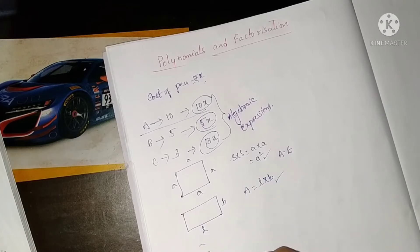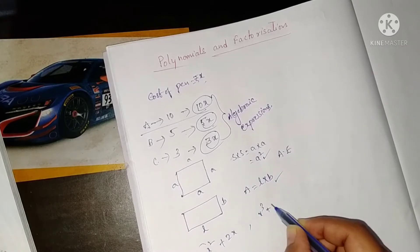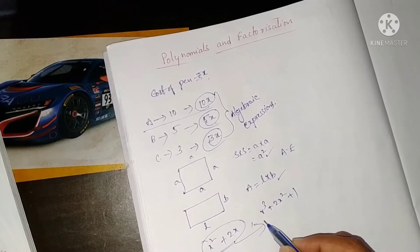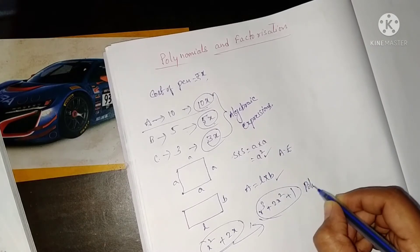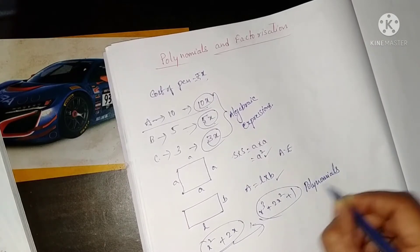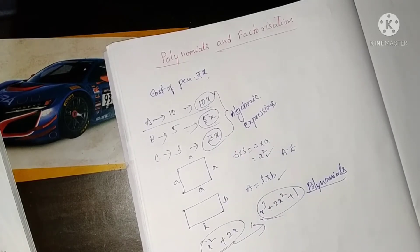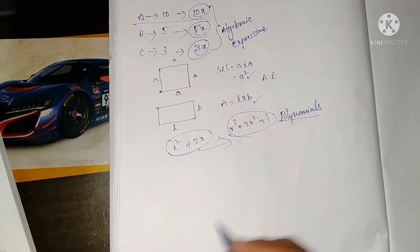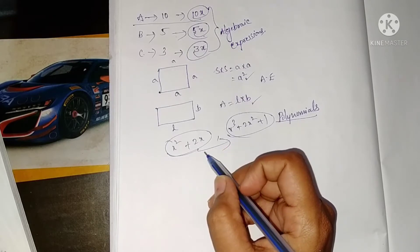Algebraic expressions such as x² + 2x and x³ + 2x² + 1 — if algebraic expressions are like this, then we call them polynomials. The condition for a polynomial is that it is an algebraic expression in which the variables involved have only non-negative integral powers.